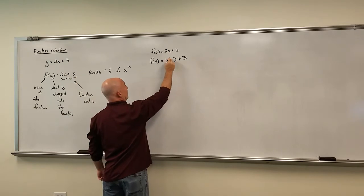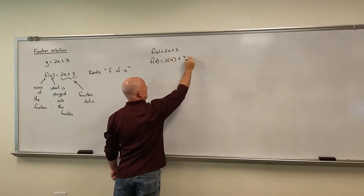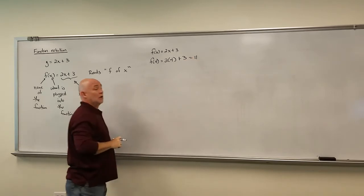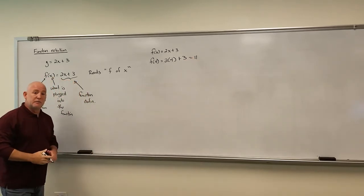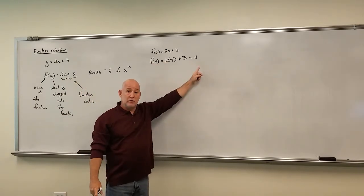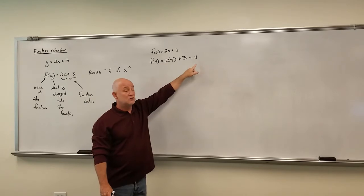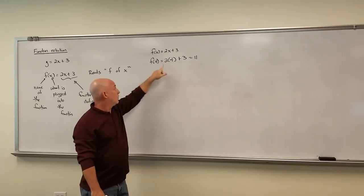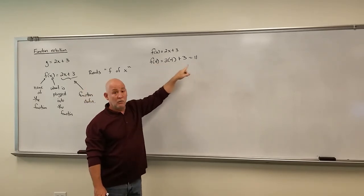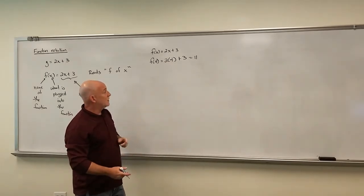So I'm going to plug a 4 right there and I'm going to go ahead and do this quick. 2 times 4 is 8, 9, 10, 11. So thinking about this in terms of a machine, we plugged in a 4 and it changed it into an 11. Or the domain was 4 and the range was an 11. Or the x value was 4 and the y value is 11. So a lot of different ways that we can interpret this using a lot of different language.